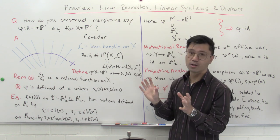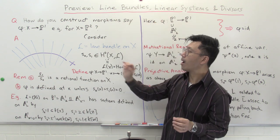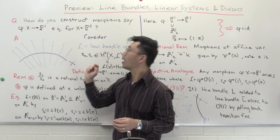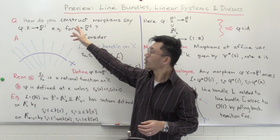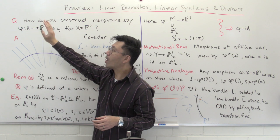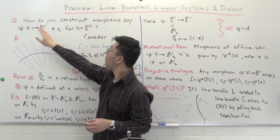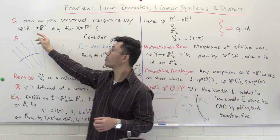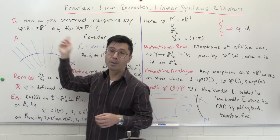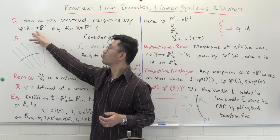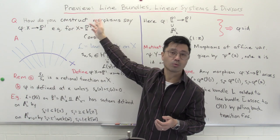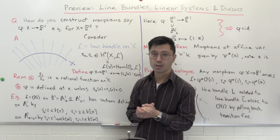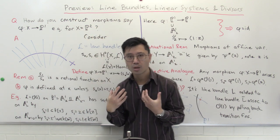They arise in this study and allow you to understand geometrically what's going on. To motivate this theory, let's look at this question: suppose you have a projective variety X. How do you construct a morphism from X to P1? The main example we'll talk about will be the projective plane.